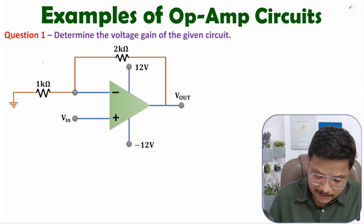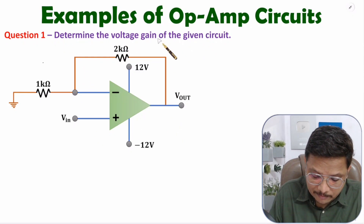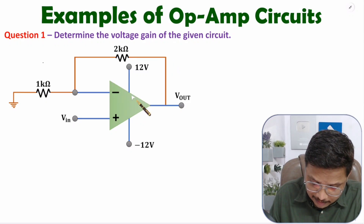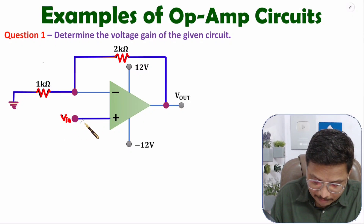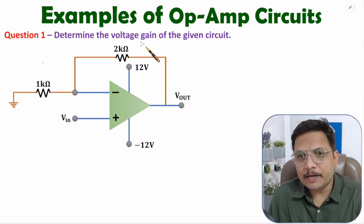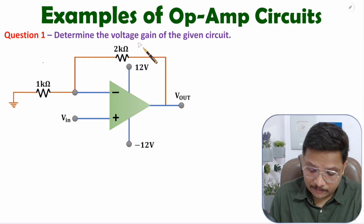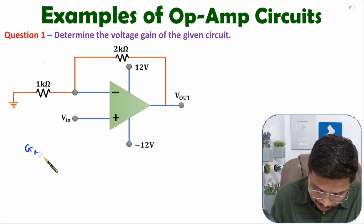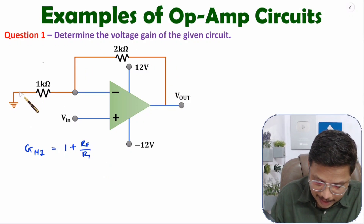Now I am going to solve the first question. We have been given an operational amplifier circuit for which we need to find the voltage gain. If you observe this circuit, we have negative feedback and we give input at the non-inverting terminal. I have already explained voltage gain calculation for non-inverting configuration.